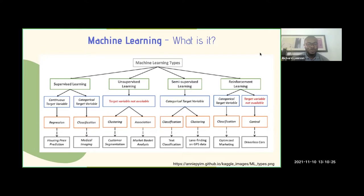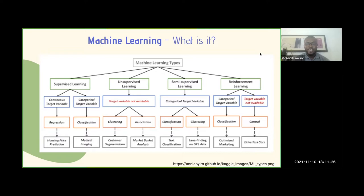Such as particular cancers. With unsupervised learning, we have clustering and association. With clustering, it has to do with customer segmentation. If you have an e-commerce platform and you'd like to do customer segmentation to know which customers patronize your products and services more, you can use the clustering model. We also have association, which boils down to market basket analysis. With semi-supervised learning, we have classification for text classification and clustering for finding lanes on GPS data.